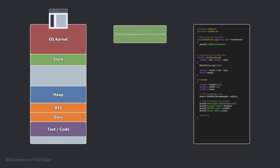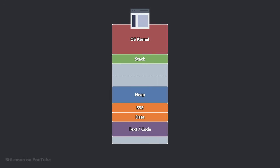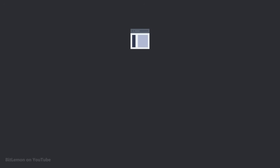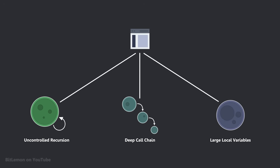The more nested the function calls, the more frames are stacked on top of each other. The infamous stack overflow error is caused by too many frames being stacked. The stack memory region is limited to a certain size, usually ranging from 1 to 8 megabytes, depending on the operating system. If a program runs a recursive function without a proper stopping condition, has a deep function call chain, or calls a function with unusually large local variables, it may crash by overflowing the stack.